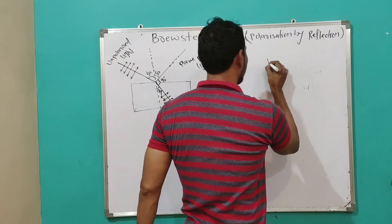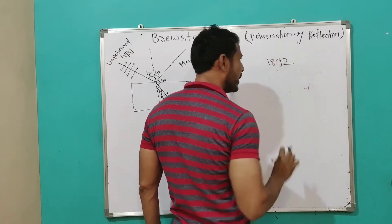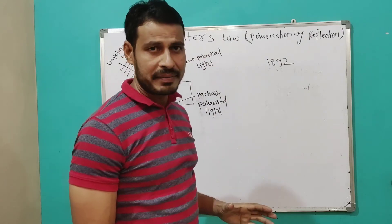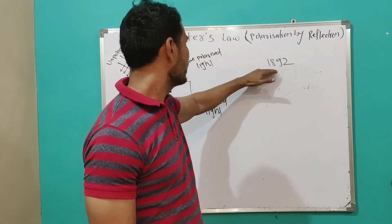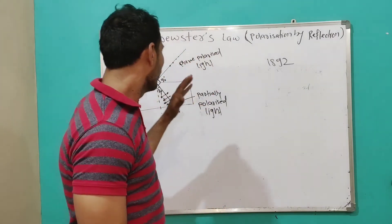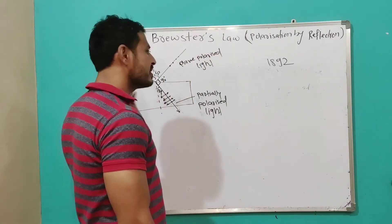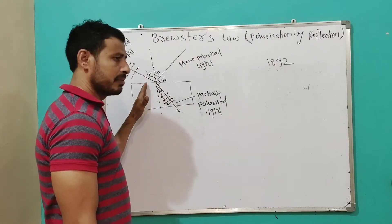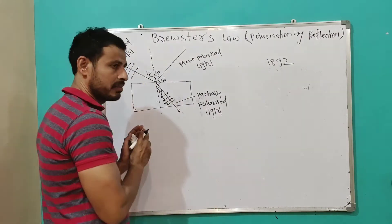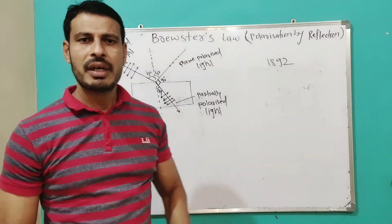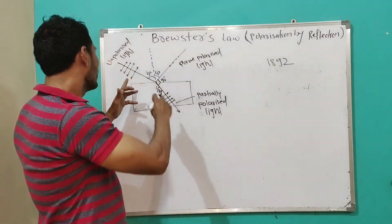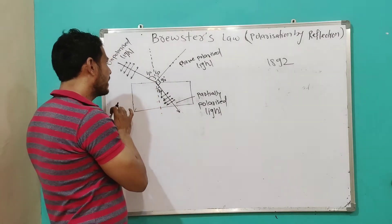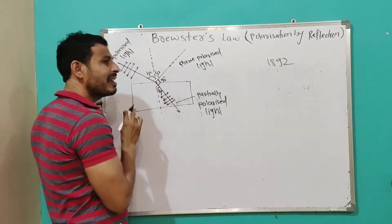In 1892, Brewster discovered that when the light is incident on a transparent medium — transparent medium means a medium which passes the light — at the polarizing angle, that is IP or theta P, also called Brewster's angle theta B.